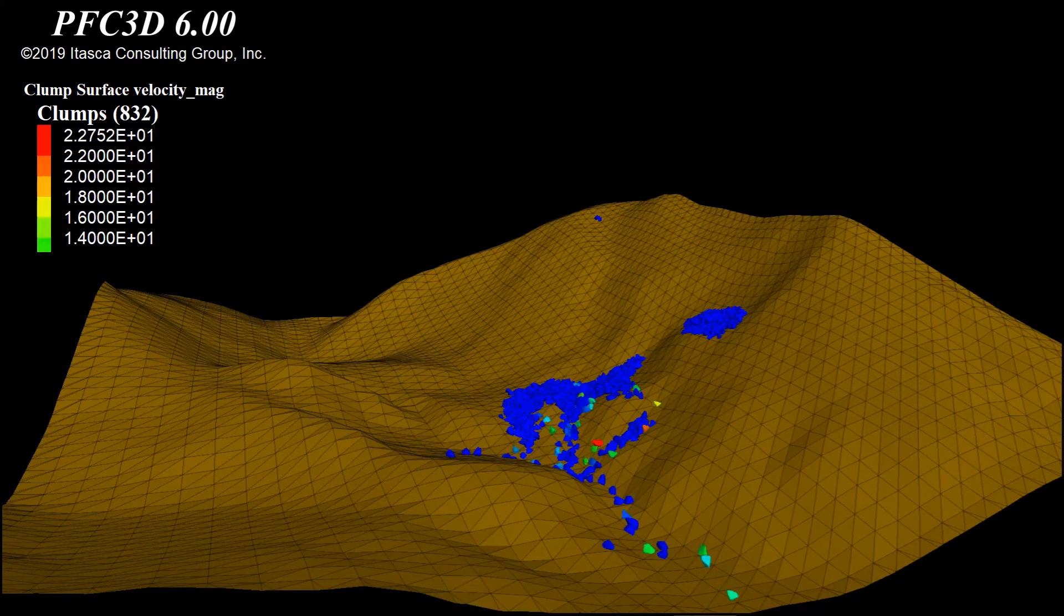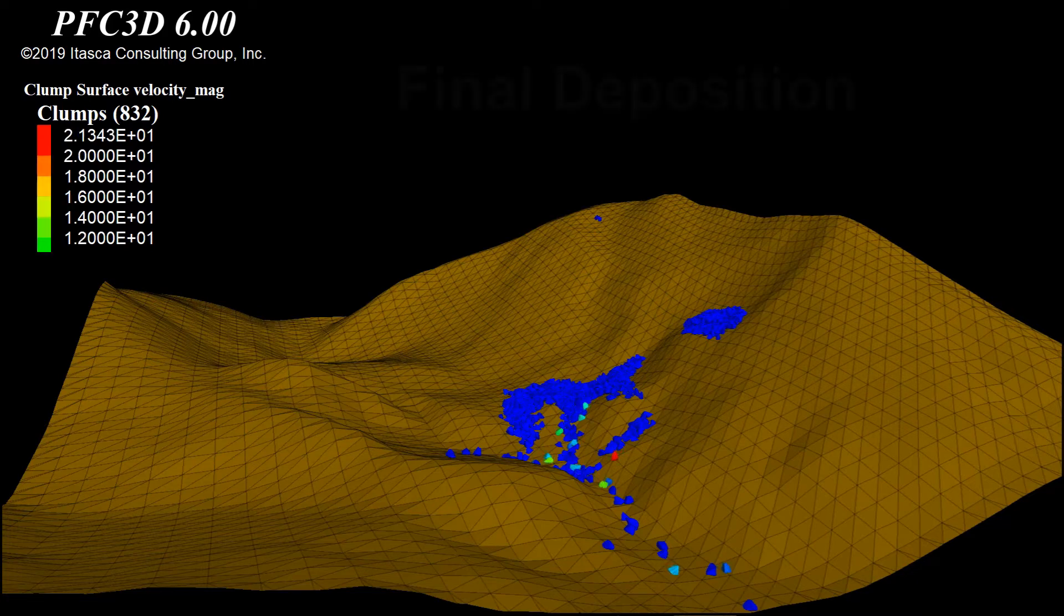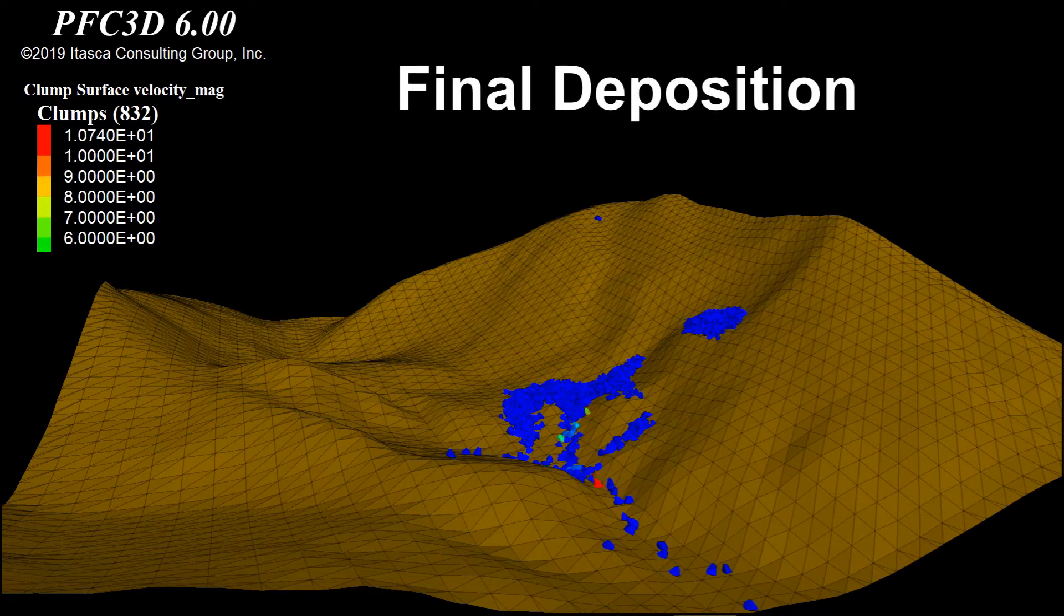After that, due to loss of energy, the particles start decelerating and finally get deposited in the lower areas.